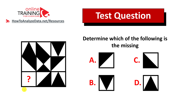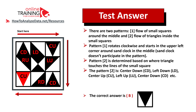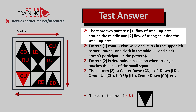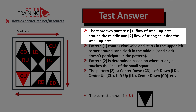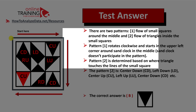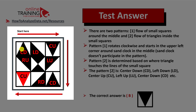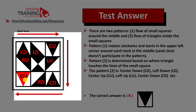Let's continue to see how we can solve this puzzle together. This challenge can be broken down into two patterns. The first pattern is the flow of small squares around the middle, rotating clockwise starting in the upper left corner — rotating around the sand clock in the middle, which does not participate in the pattern. The second pattern is determined by where a triangle touches the lines of the small square. The triangle in the upper left corner touches the top and bottom lines; the next touches left and down; the following touches up and center. Continuing this pattern determines the missing item, which is Choice B.